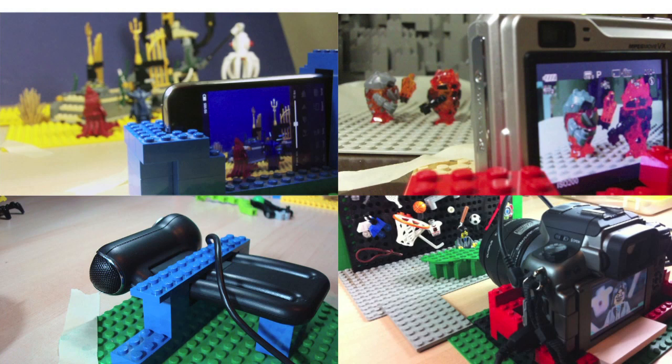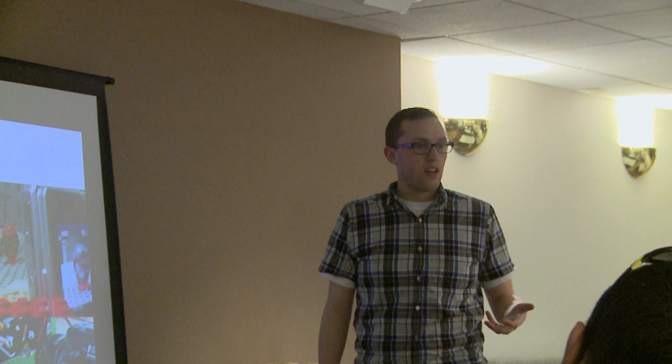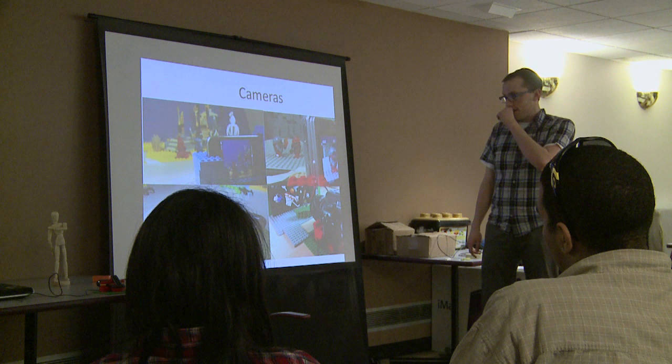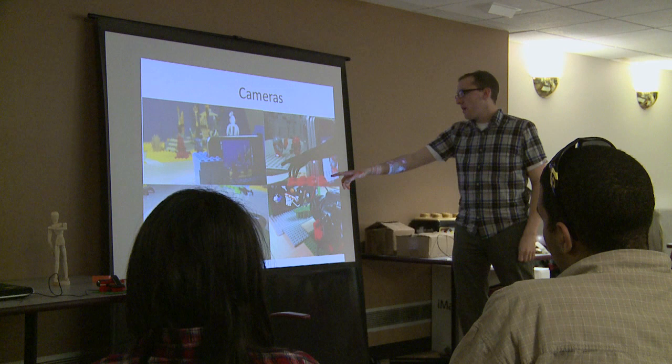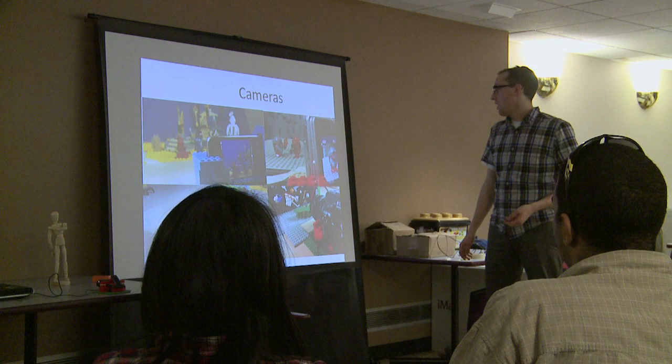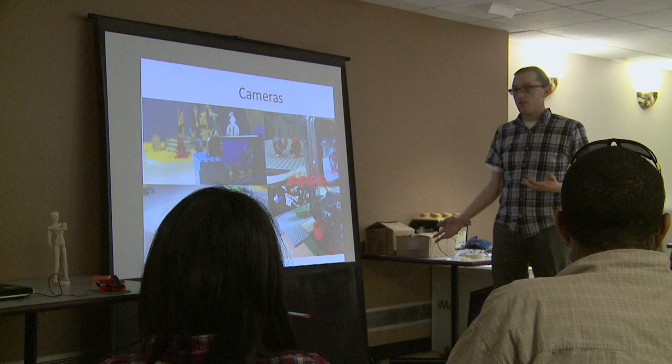What camera you choose really depends on what you've got and what you're trying to do. Obviously for light animations you need a camera where you can set a long exposure. The more control you have over camera settings, the more you'll control what your animation looks like. There are stop motion apps for iPhone and iPad. Webcams are nice because they hook directly into a computer, making them easy to control using stop motion software. DSLRs are what a professional animator would use — you have the most control and can swap in different lenses.